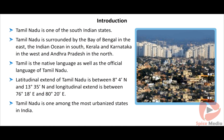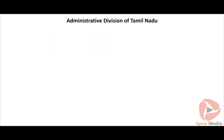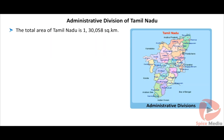Tamil Nadu stands 4th in population and 7th in area among the states of India. Tamil Nadu is one of the most urbanized states in India. It is a hub of many natural resources, cool hill stations, grand Hindu temples of Dravidian architecture, beach resorts, religious sites, and a few UNESCO World Heritage Sites.